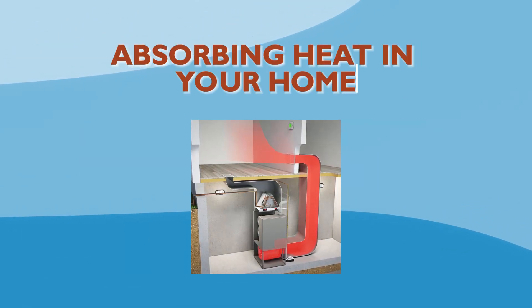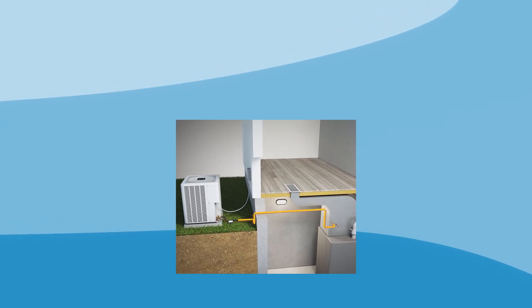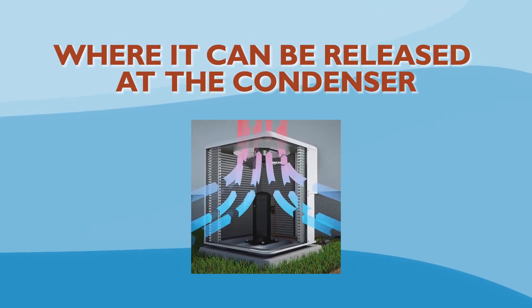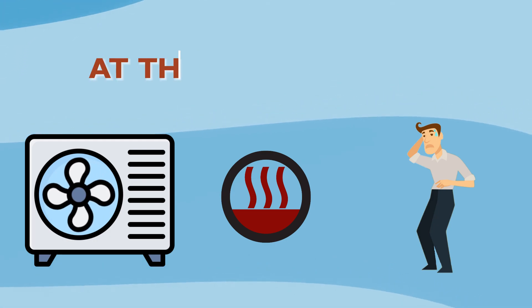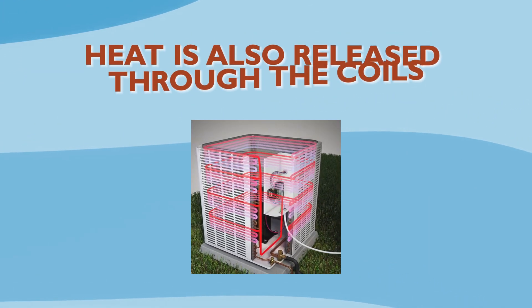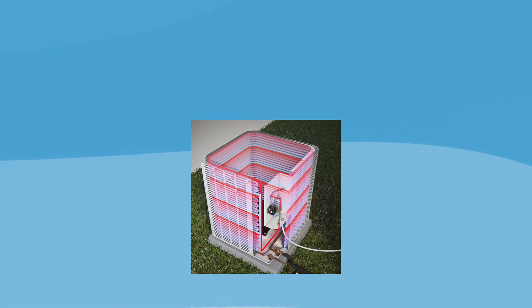The refrigerant works by absorbing heat in your home and transferring it outside, where it can be released at the condenser. This is why you feel hot air coming off the air conditioner's fan at the outdoor unit. Heat is also released through the coils that surround the outdoor unit.